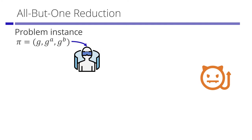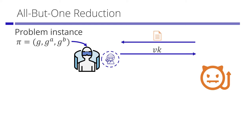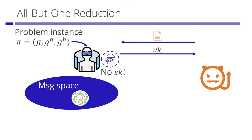I explain a high-level overview of all-but-one reductions using the Boneh-Boyen signature case. The signature scheme is selectively secure under the computational Diffie-Hellman assumption. The all-but-one reduction works as follows: first, the reduction is given a problem instance pi, which consists of G, G^a, G^b. When the adversary declares the target message, the reduction simulates a verification key using the problem instance and the target message. Note that the reduction does not have the secret signing key. At this point, the message space has a hole — it is punctured at the target message.